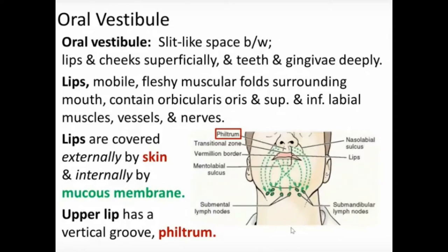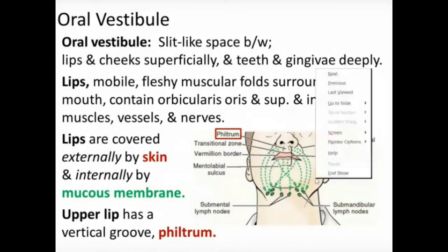The lips are covered externally by skin and internally by mucous membrane. The upper lip has a vertical groove in the median plane called the philtrum, which extends from the root of the nose down to the margin of the lip. This is a median depression dividing the upper lip.